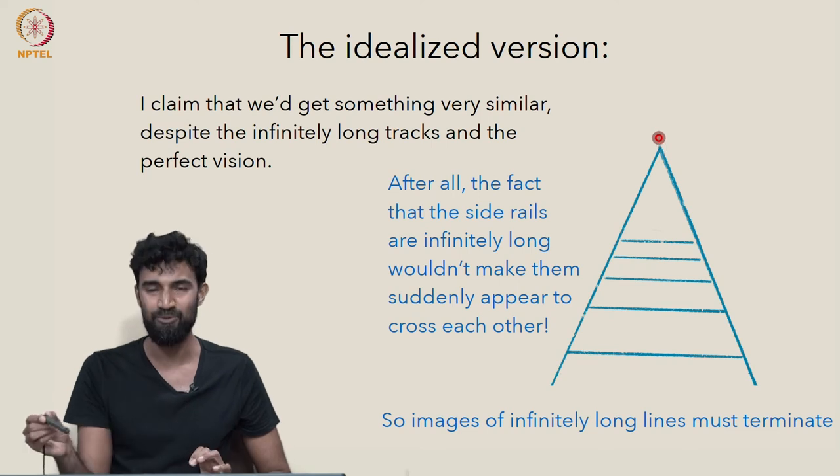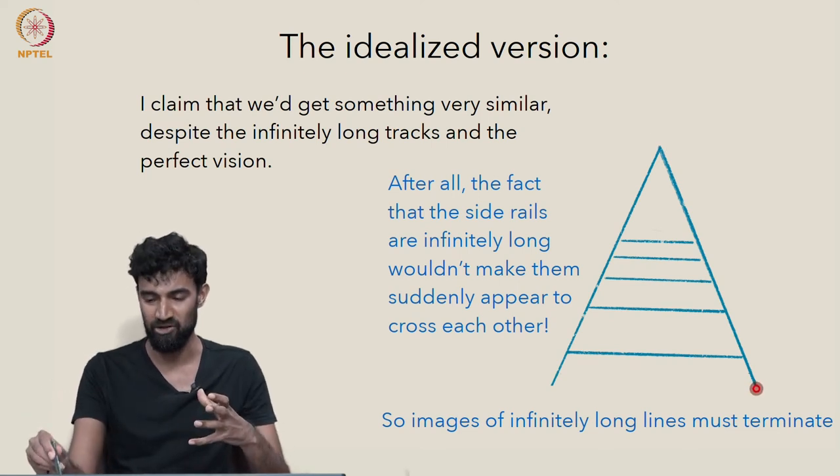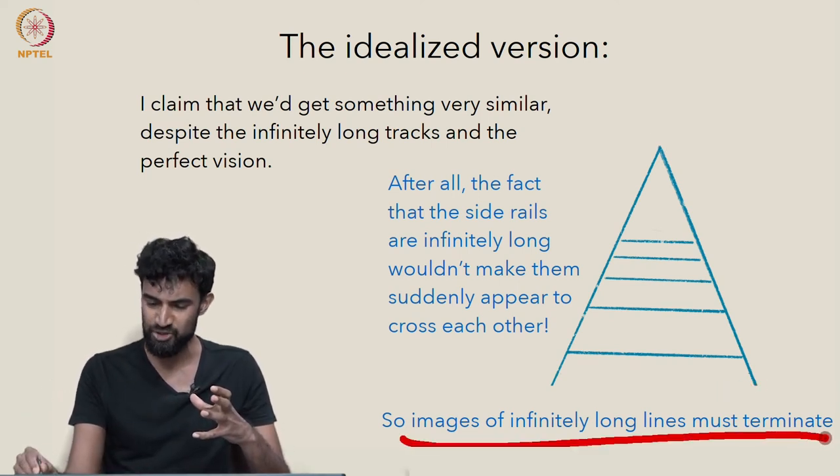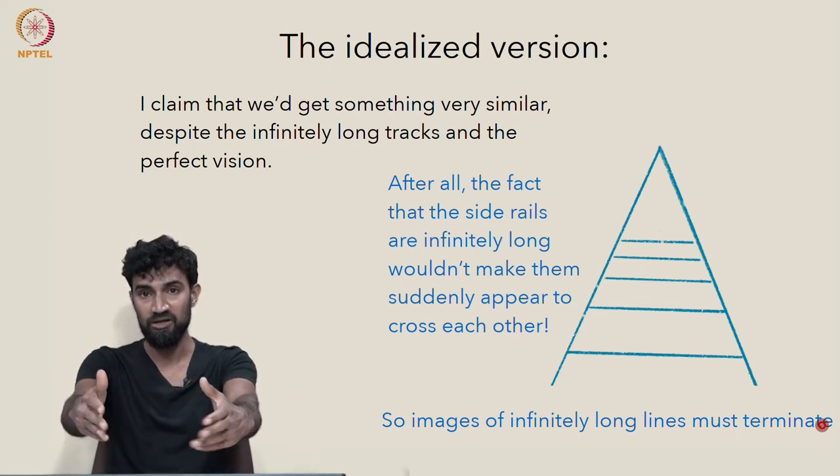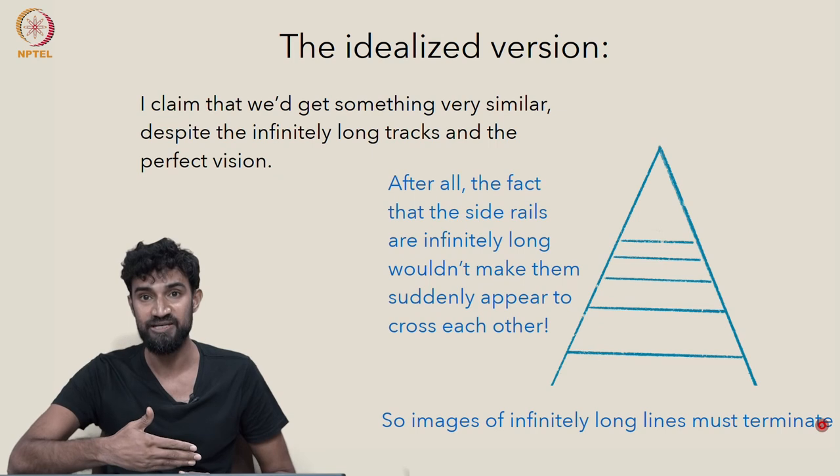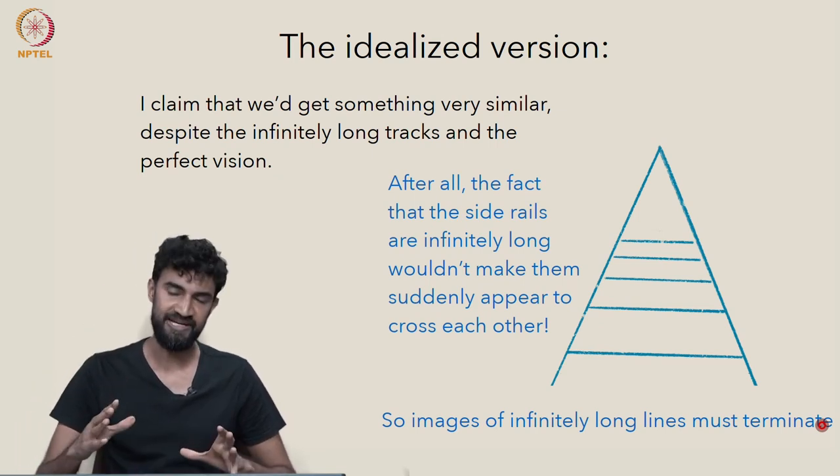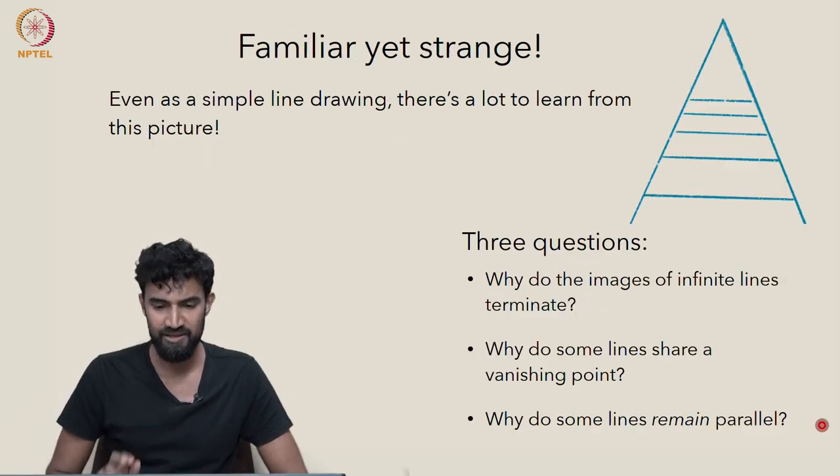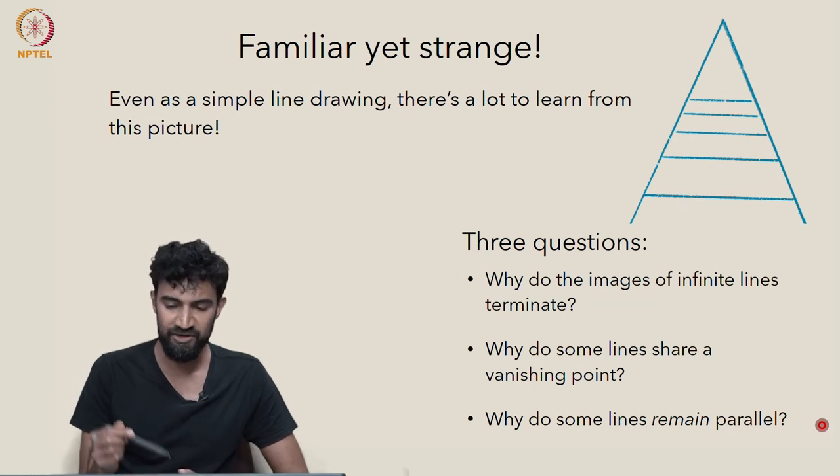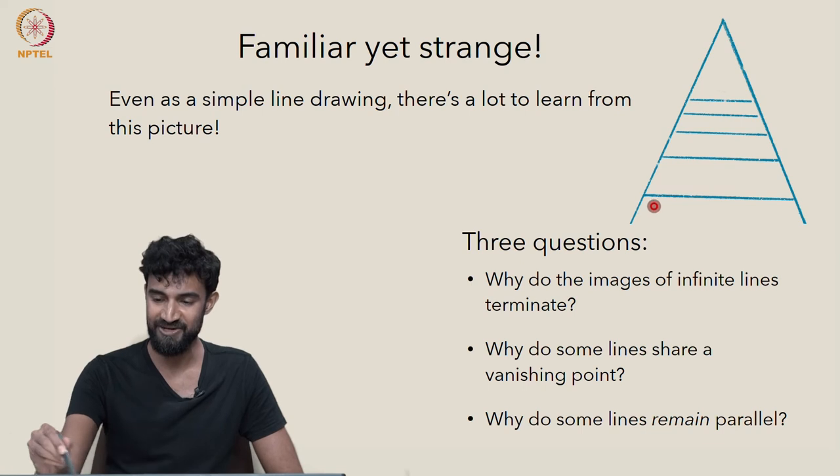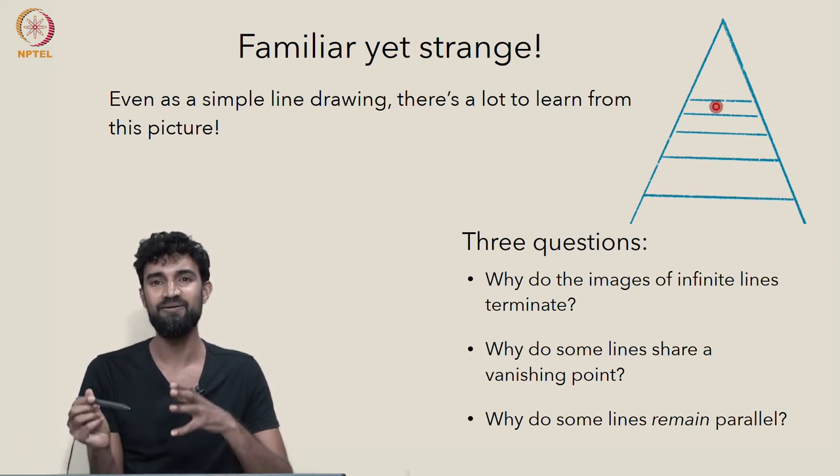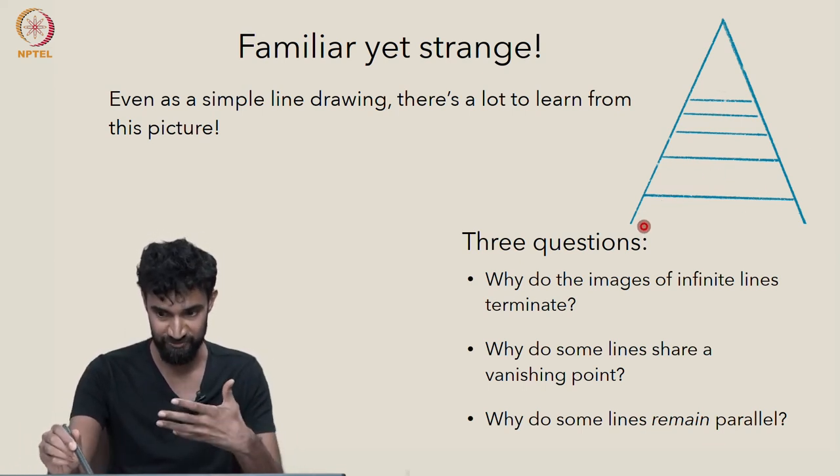The reason that I wanted to consider infinitely long lines is to get to this conclusion, which is a bit strange. Lines in space that are infinitely long will still have images in the picture plane which are finite, which end. So that's just one of several strange features of this very simple line drawing we get when we observe railway tracks.